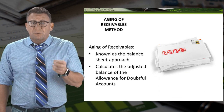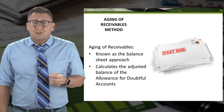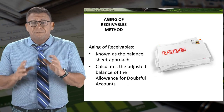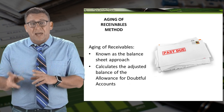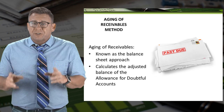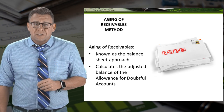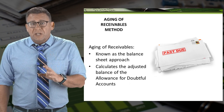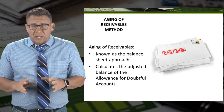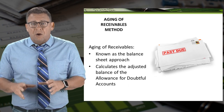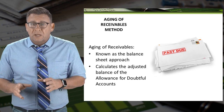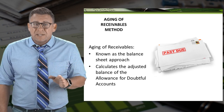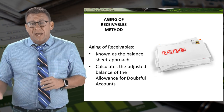The aging of receivables method is sometimes called the balance sheet approach to estimating bad debt expense because it focuses on the balance sheet account allowance for doubtful accounts. The method calculates what the adjusted balance in the allowance for doubtful accounts should be, then we record bad debt expense to make that balance correct.